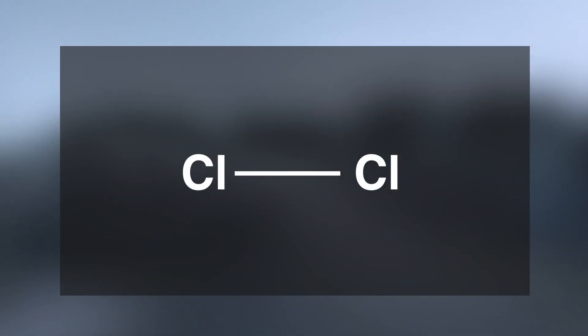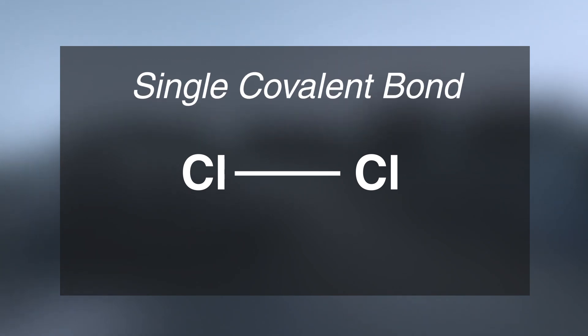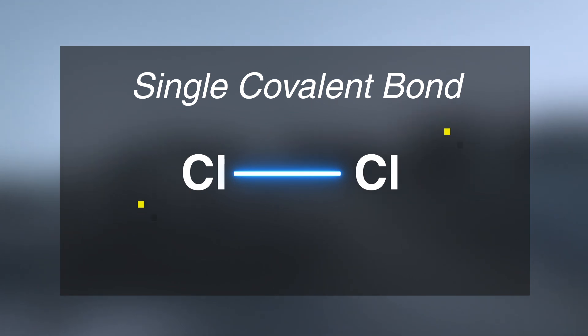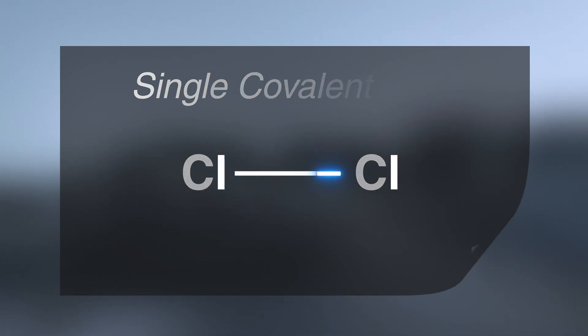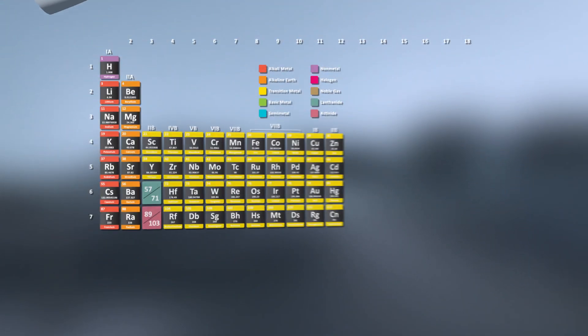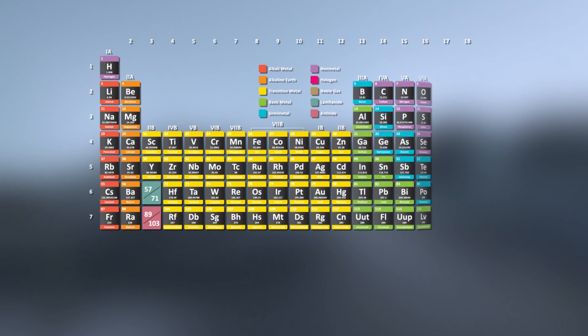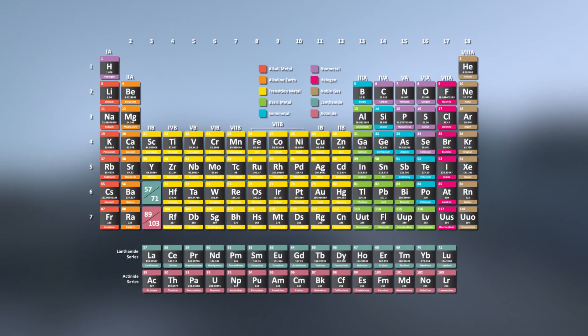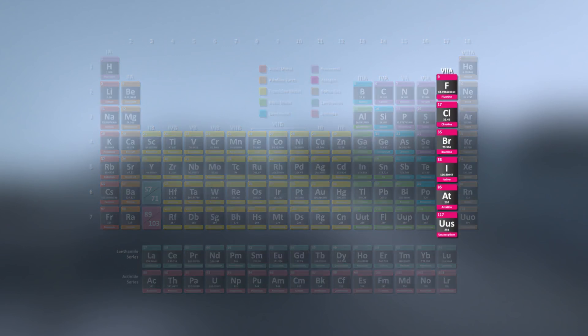Since there is sharing of only one electron, the bond formed is a single covalent bond. It is represented by a single line. Single covalent bond is formed between the similar atoms of group 7A.